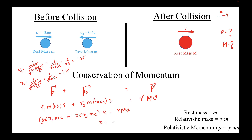We get 0 equals gamma times capital M times v. Since gamma cannot be zero (gamma is always greater than or equal to 1) and rest mass capital M is definitely not zero, the velocity v must be zero. This means the combined particle resulting from the collision is at rest.